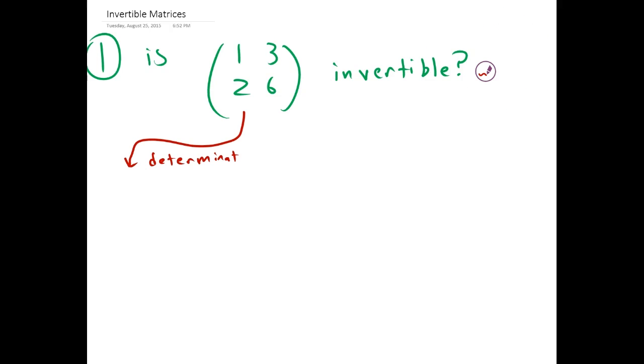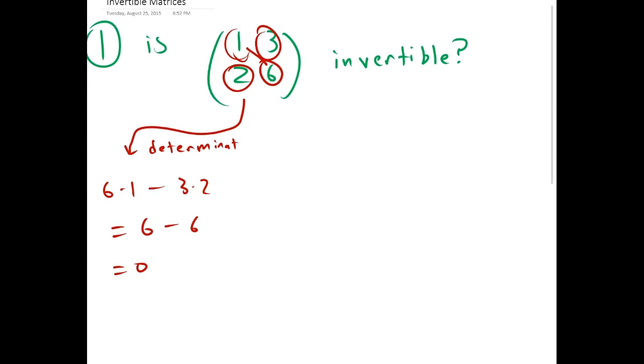The determinant of this matrix is the product of this entry and this entry, so six times one, minus the product of this entry and this entry, so three times two. This ends up being six minus six, which is zero. And since this has a zero determinant, it is not invertible.